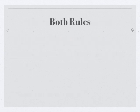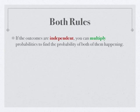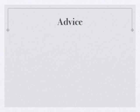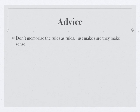So here are both rules together. Outcomes are independent. You can multiply probabilities. If they're mutually exclusive, you can add probabilities to find the probability that any one of them happens. Two pieces of advice. First of all, don't memorize the rules as rules. They look like big hairy rules. Just trying to memorize them is asking for disaster. But do make sure they make sense.